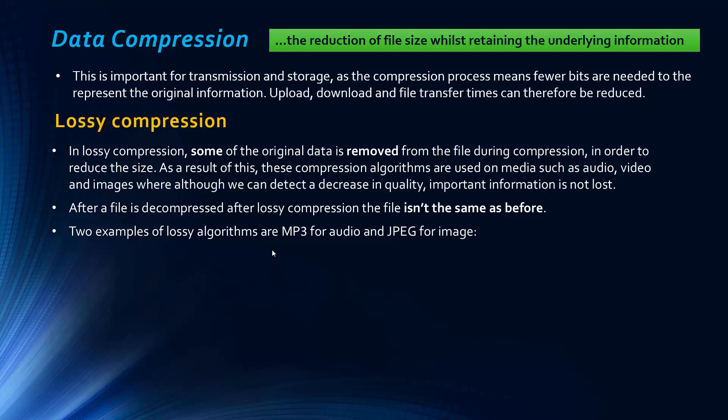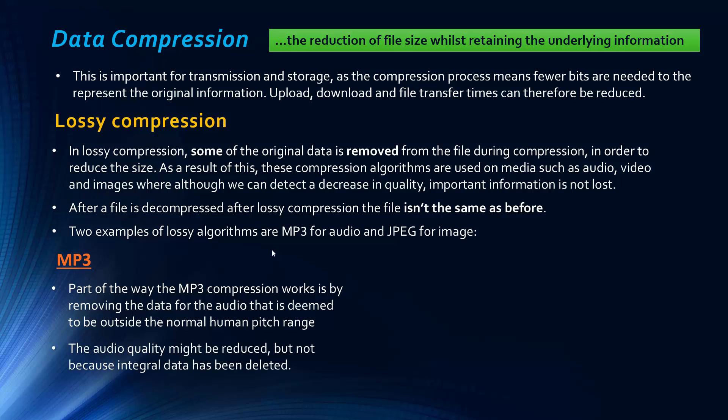These compression algorithms are used on files like audio, video, and image files because we can detect a decrease in quality, but that only really affects us. The important information is not lost. We can still watch the video, we can still listen to the music. We might be annoyed by the quality, but we can still use the file. Whereas if we started deleting information from program files or a Word document, we'd be quite unhappy if we lost data like that. Two examples are MP3 and JPEG. The MP3 file, part of the way the compression works is by removing data for the audio that is deemed to be outside the normal pitch range.